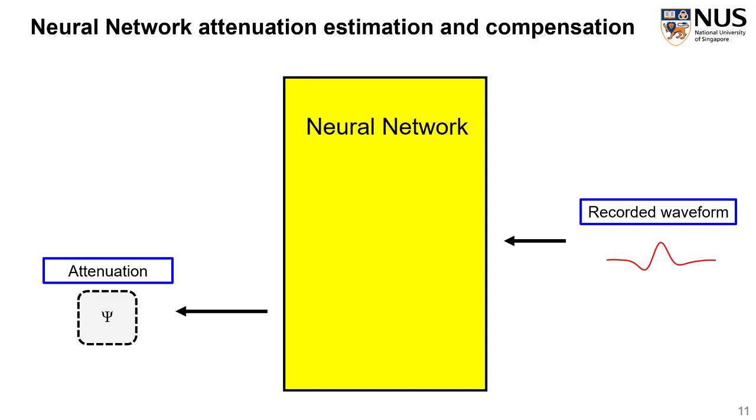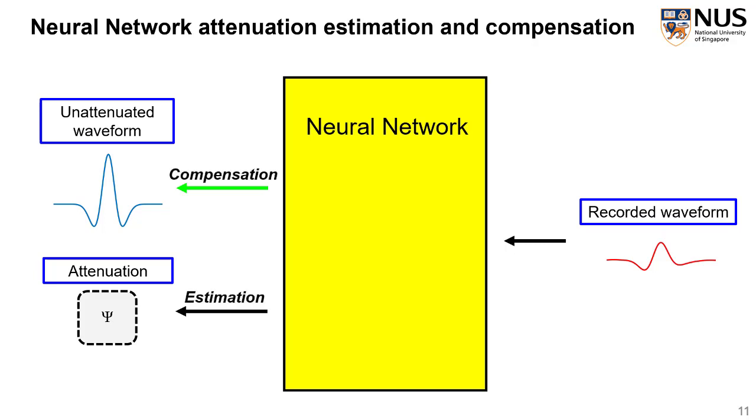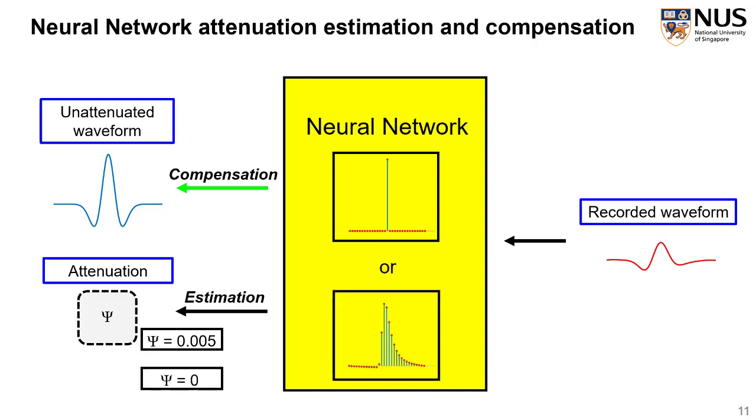Therefore, we desire a neural network that could perform not only attenuation estimation, but also compensation simultaneously, because these two processes are constraining each other. As for the ambiguity, we can use training data set to teach the neural network to choose from the ambiguous situations. For example, if our training data was the label of this, then the neural network will adapt to the sparse reflectivity situation. However, if the label is zero instead, then the neural network will be suitable for such scattering Q reflectivity situation.